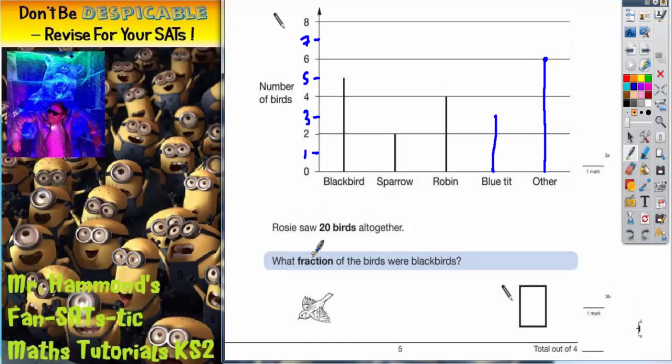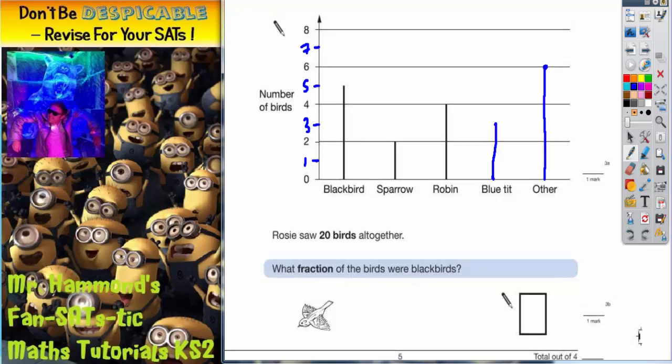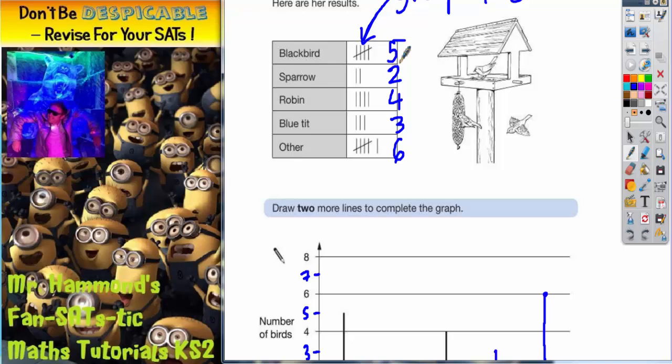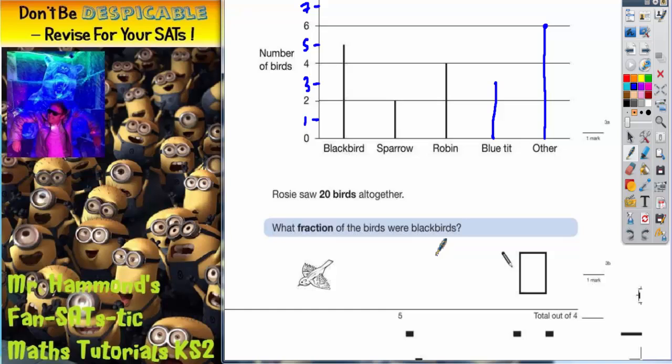Final part of the question. Rosie saw 20 birds all together. What fraction of the birds were blackbirds? Well blackbirds, there were 5 blackbirds. So one answer we could put is 5 out of 20 because you saw 20 all together. 5 of them were blackbirds out of a possible 20. And that would be an acceptable answer.